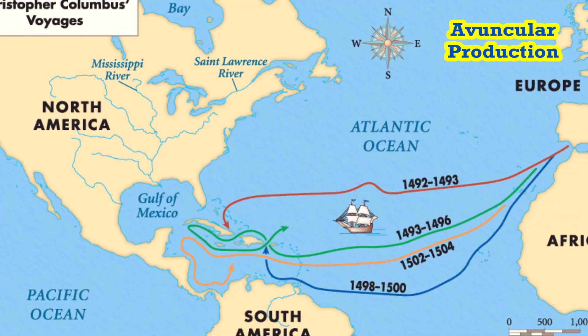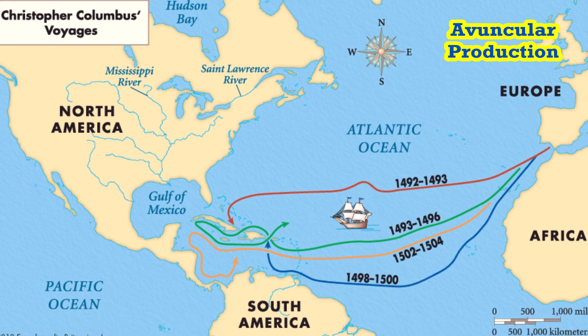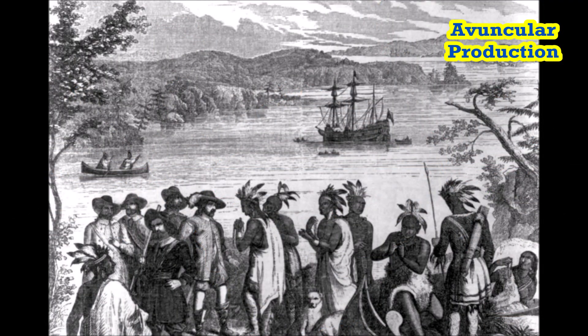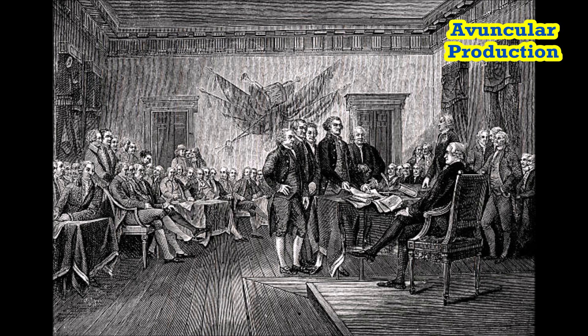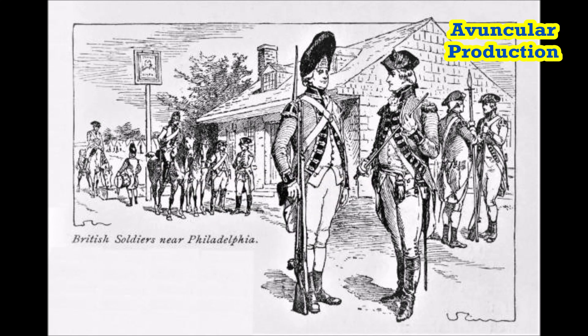Key victories, such as the Battle of Saratoga in 1777, which brought French support to the American cause, and the decisive siege of Yorktown in 1781, where British General Cornwallis surrendered, marked turning points in the war. The Treaty of Paris, signed in 1783, officially ended the war and recognized the United States as an independent nation.